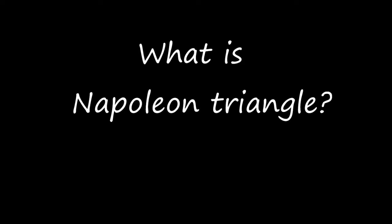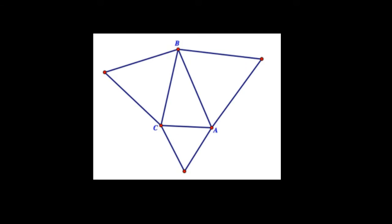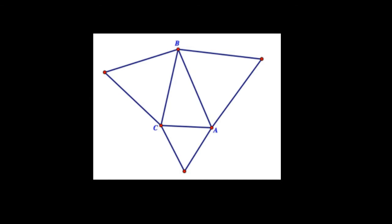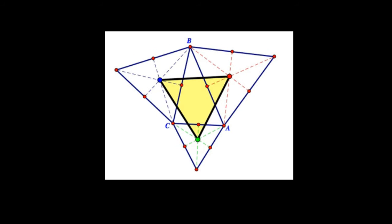What is Napoleon's triangle? Napoleon's theorem states that when equilateral triangles are constructed on the sides of a triangle, if the centroids of all those three equilateral triangles are joined, they form another equilateral triangle called Napoleon's triangle.